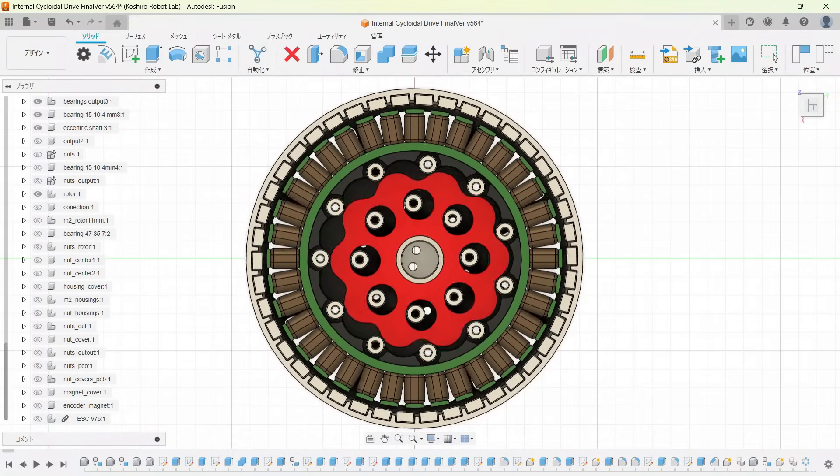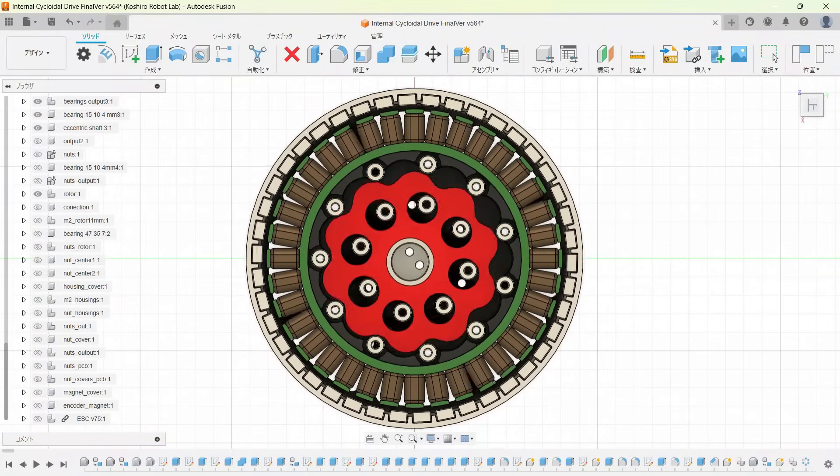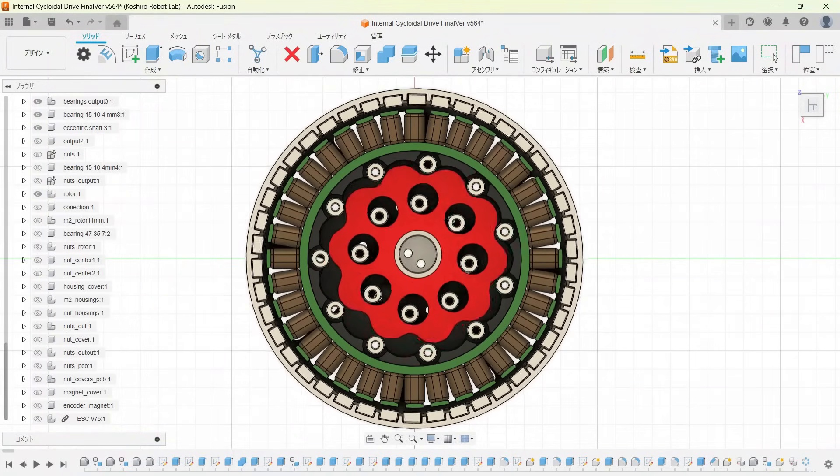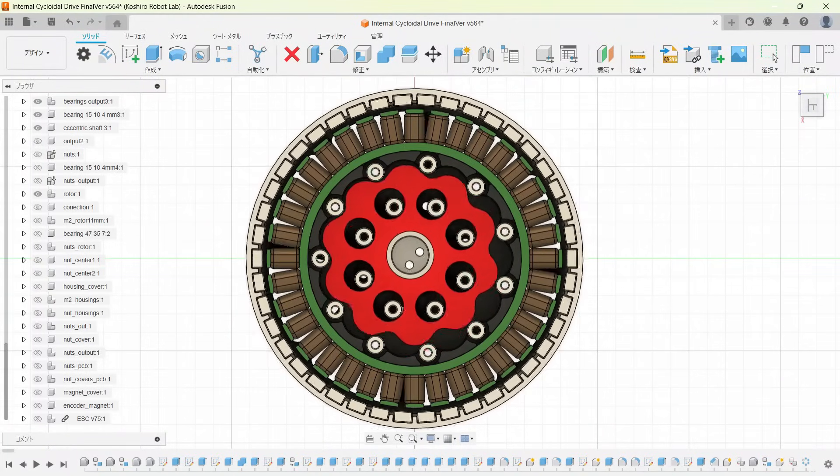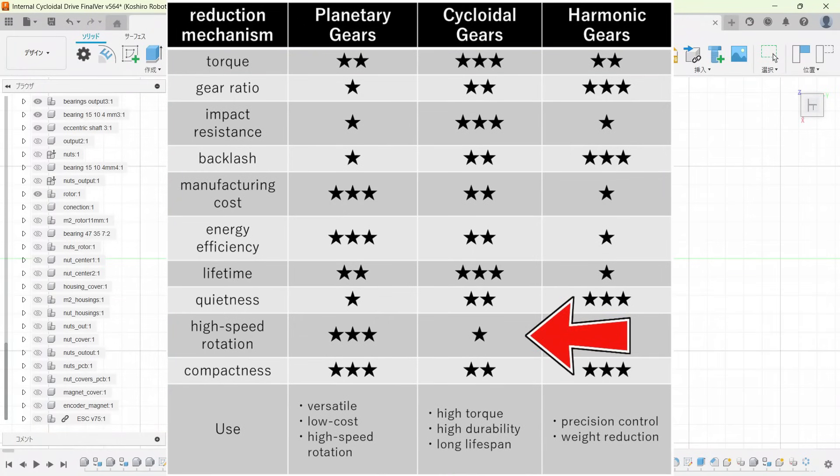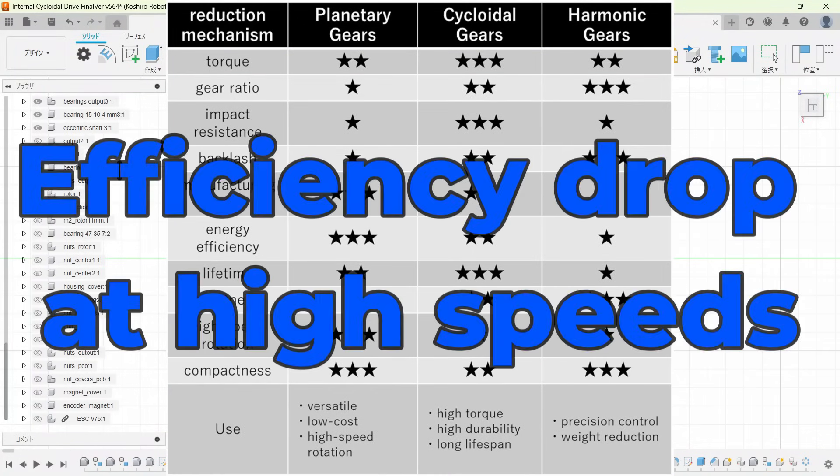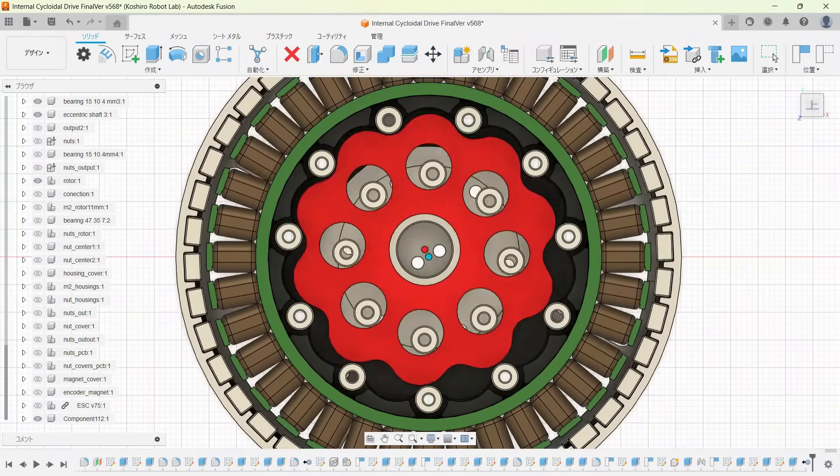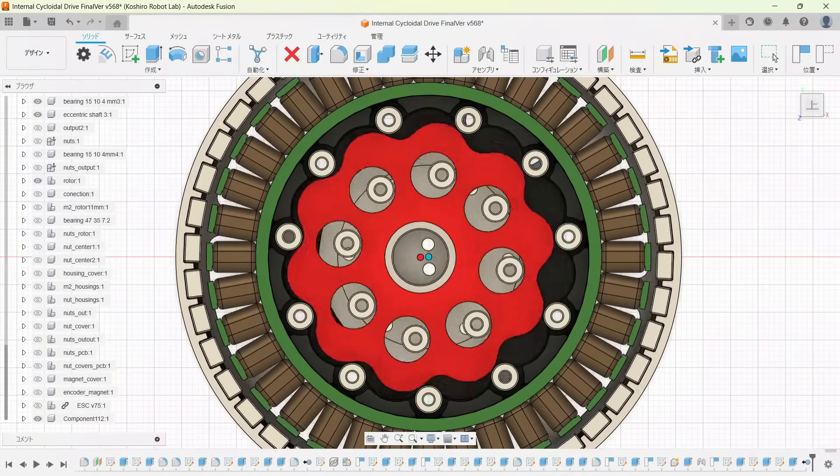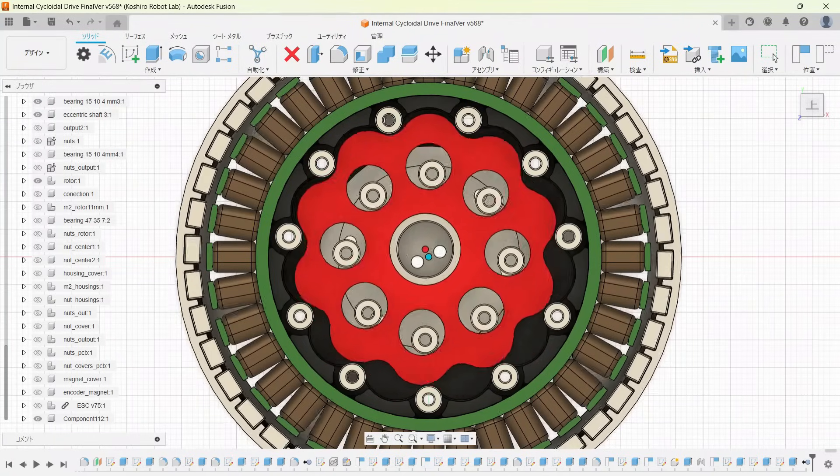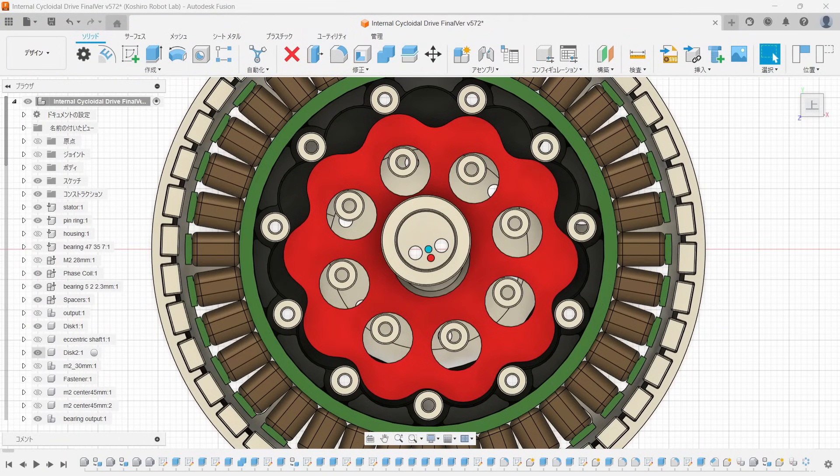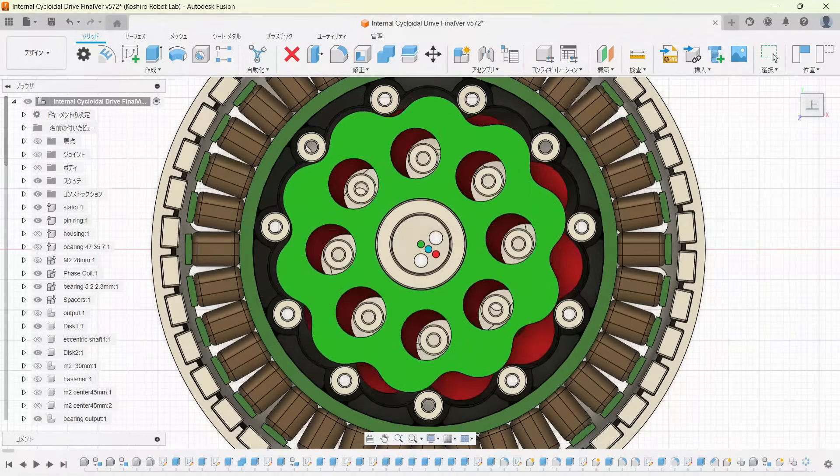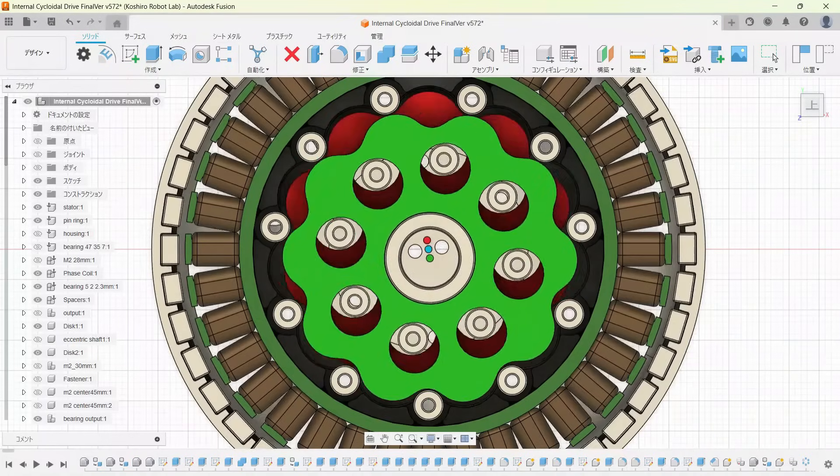Using an outrunner BLDC motor with a cycloidal reducer in the center is a very logical solution for a quadruped robot actuator. However, cycloidal gears do have two main drawbacks: reduced efficiency at high speeds and manufacturing difficulty. First, efficiency drops at high speeds because the cycloidal mechanism relies on an eccentrically rotating disc. When an off-center mass spins at high speed, it generates vibration. To solve this, cycloidal reducers typically use a second disc running in the opposite phase to cancel out the eccentric motion and reduce vibration.